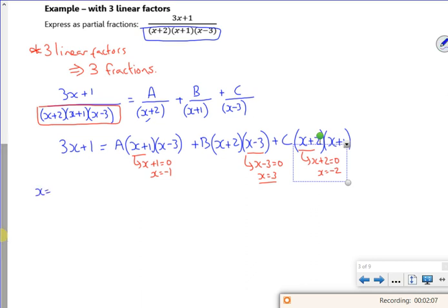So if x is minus 1, I've got three lots of minus 1 plus 1, which is minus 2. If I put minus 1 in the a, it disappears because the x plus 1 makes it 0. So for the b, that would be a minus 1 plus 2, and a minus 1 minus 3. So I've got 1 times by minus 4, so I've got minus 4b.